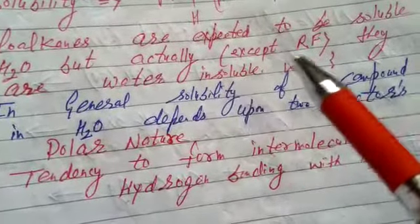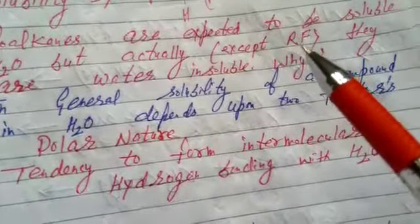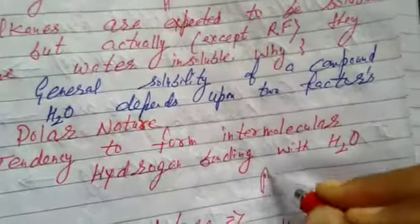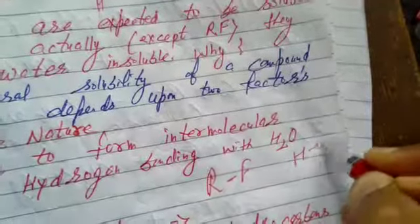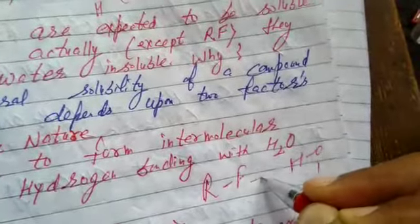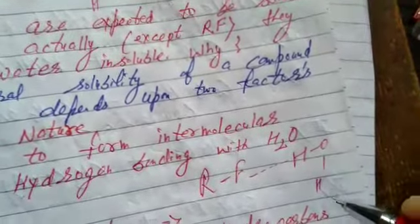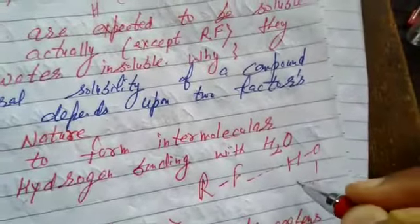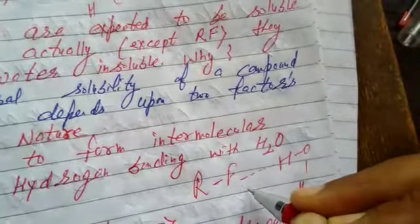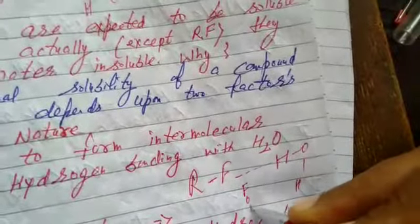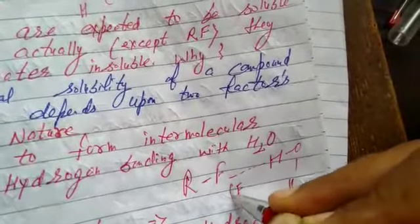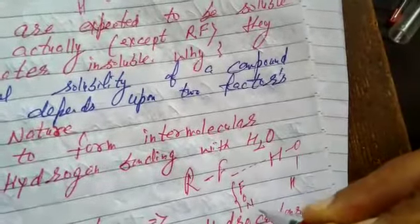Which haloalkane is soluble in water? That is fluoroalkane, RF. Because it has the maximum tendency to form intermolecular hydrogen bonding, fluorine being the most electronegative element. We know hydrogen bond is the bond between hydrogen atom of one molecule and most electronegative atom, that is fluorine, oxygen or nitrogen of other molecule. Only these electronegative elements participate in hydrogen bonding.